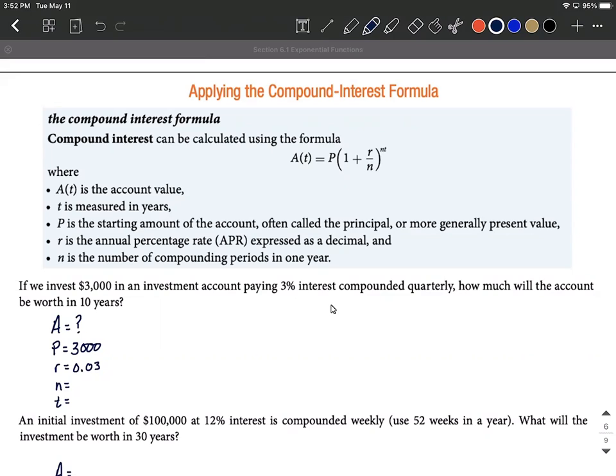Our number of compoundings is based on this being compounded quarterly. Since there are four quarters in a year, that's going to happen four times per year, every three months. Our time frame t is 10 years, so t equals 10.